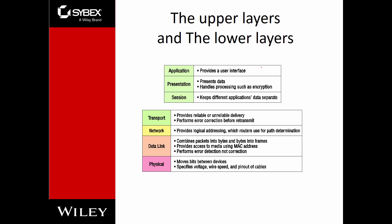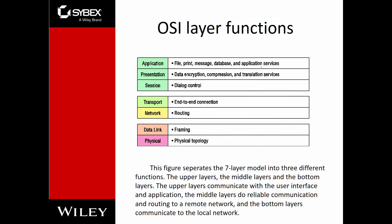The OSI layer model is extremely important. Here's a quick summary of each layer. Application: interaction with applications. Presentation: encryption, compression, translation. Session: dialogue control. Transport: end-to-end connections and termination of connections. Network: routing and path determination. Data Link: framing and frame forwarding. Physical: the actual signal.